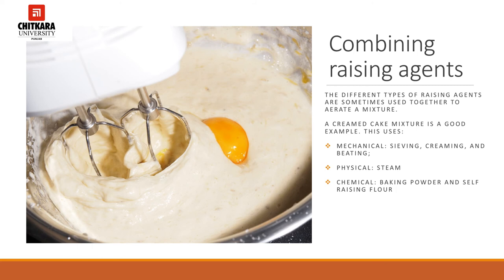Now let's talk about combining raising agents. The different types of raising agents are sometimes used together to aerate a mixture — a creamed cake mixture is a good example. This uses mechanical, physical, and chemical raising agents. As a mechanical raising agent, air is added by sieving the flour, creaming the fat and sugar, and beating in the eggs. As a physical agent, steam is formed from the liquids during cooking. As a chemical agent, carbon dioxide is released from the baking powder or self-raising flour when the liquid is added and during cooking.